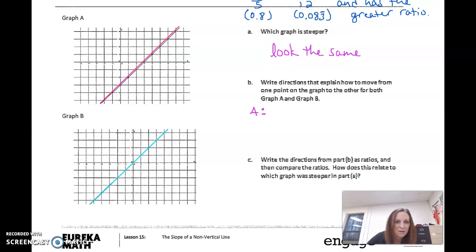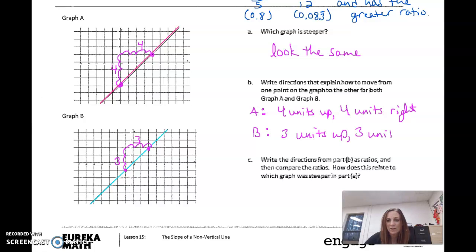So let's do our directions again. A. Say if we go from this point to this point. One, two, three, four. So I'm going to go up four. And one, two, three, four. I'm going to go to the right four. So four units up, four units right. So this next one here, let's say I'm going to go from here to here. So I'm going to go up one, two, three. And I'll go to the right one, two, three. So for B, three units up, three units right.